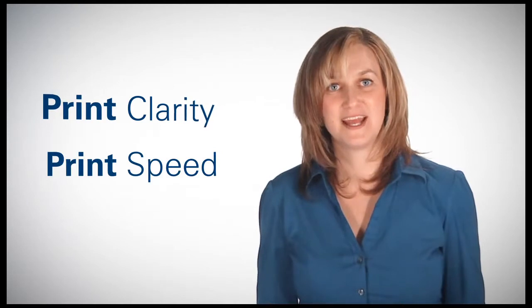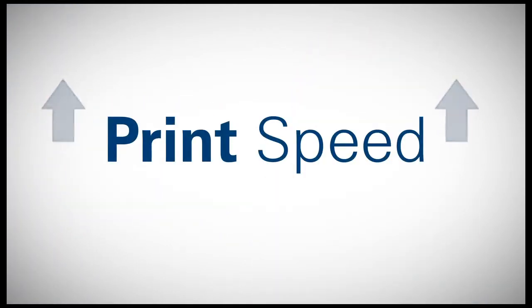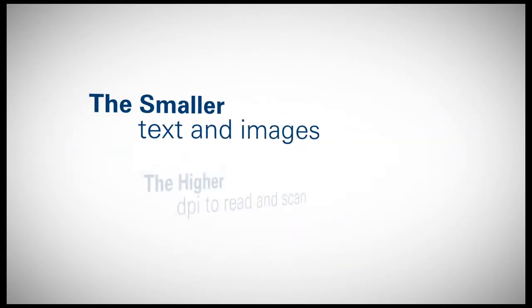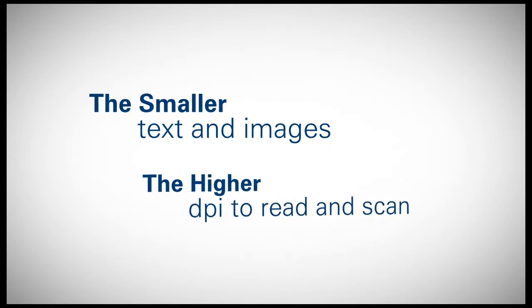Print clarity, print speed, and label format are interrelated. The higher the print speed, the lower the DPI. As a general rule of thumb, the smaller the text and images, the higher the DPI needed to read the text and images and scan the barcode.